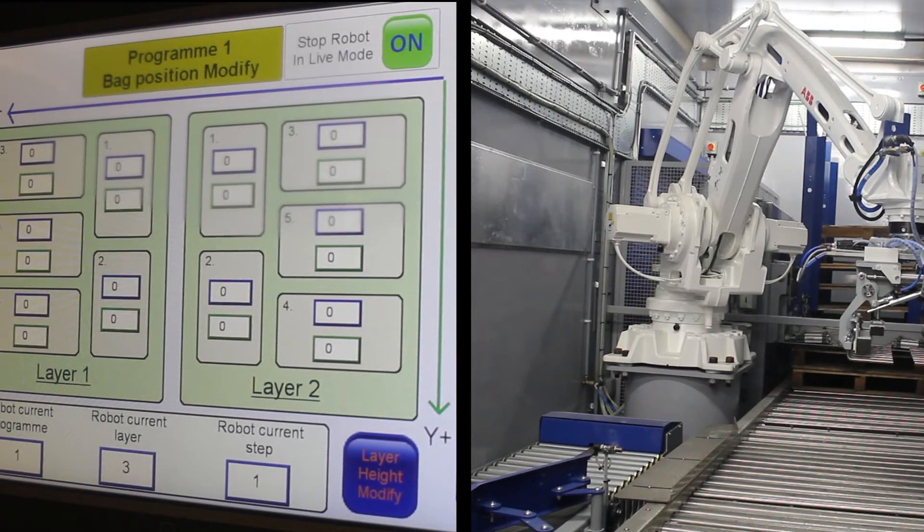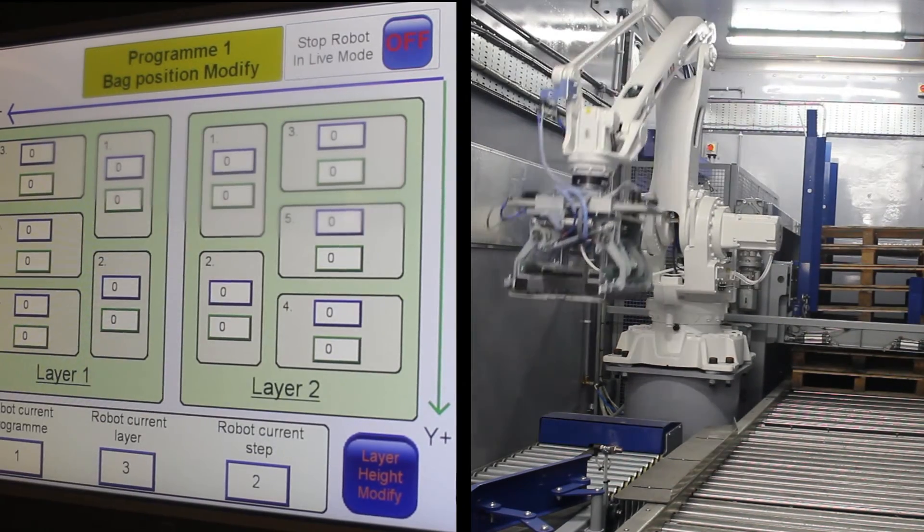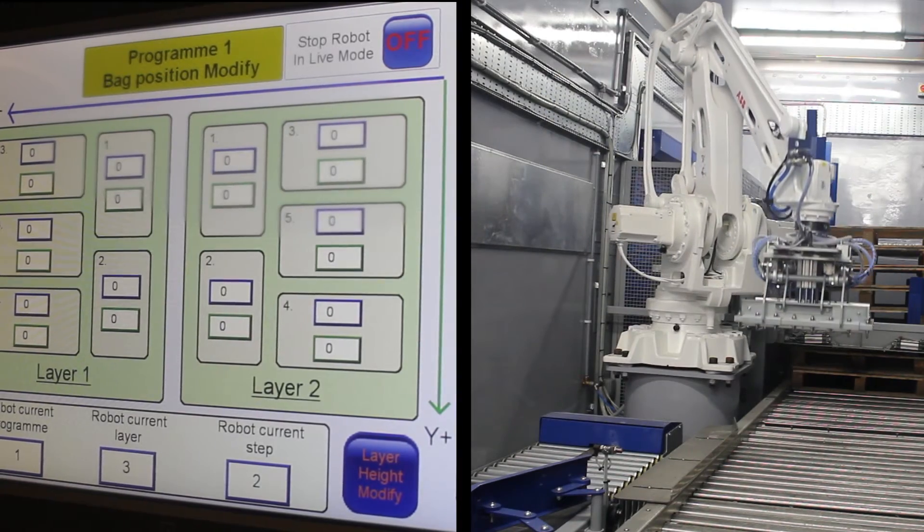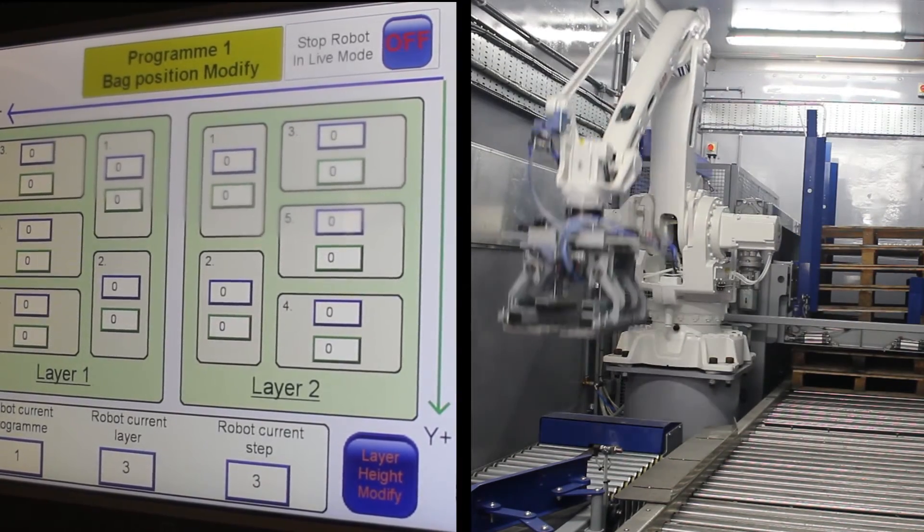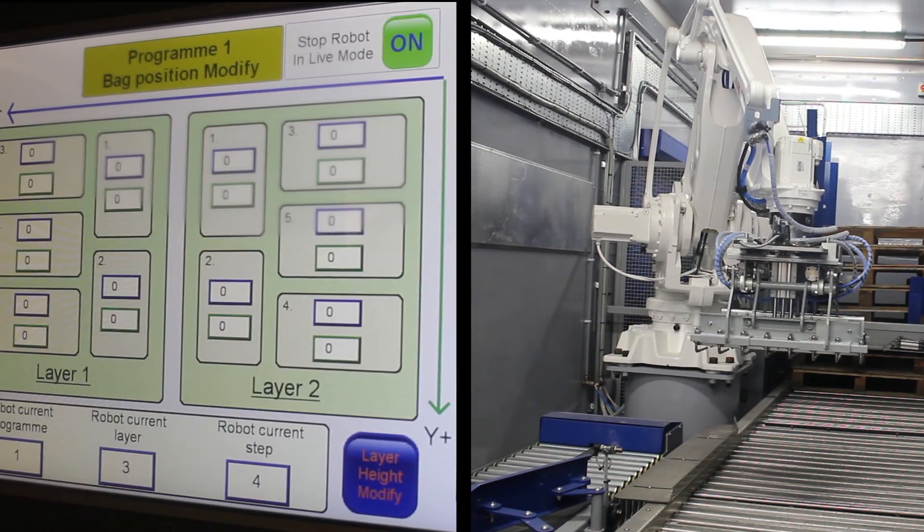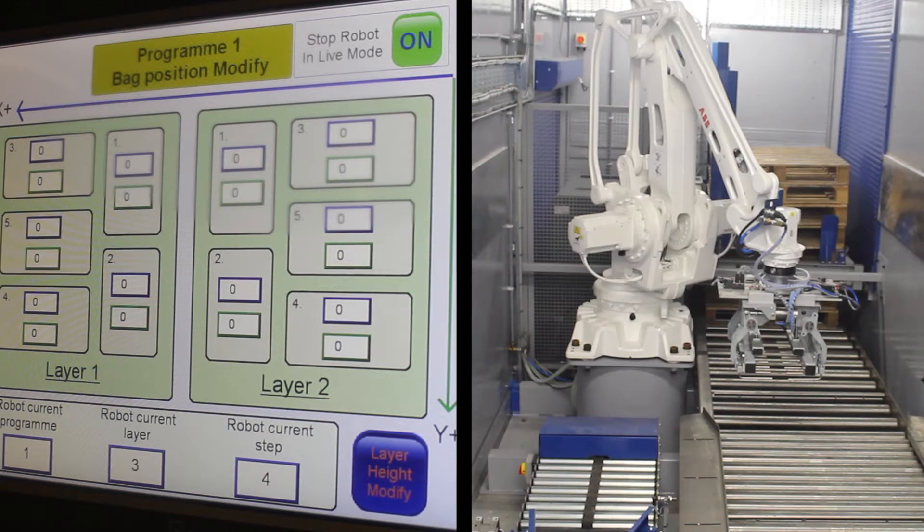When you first come onto the bag modified position page, what you'll have is the robot live mode. So what that basically is, is stops the robot in automatic. What that does is allows you to stop that robot when it goes down to its placed position. Once it's stopped at its placed position, you can then change the step of the robot or the position of the robot.